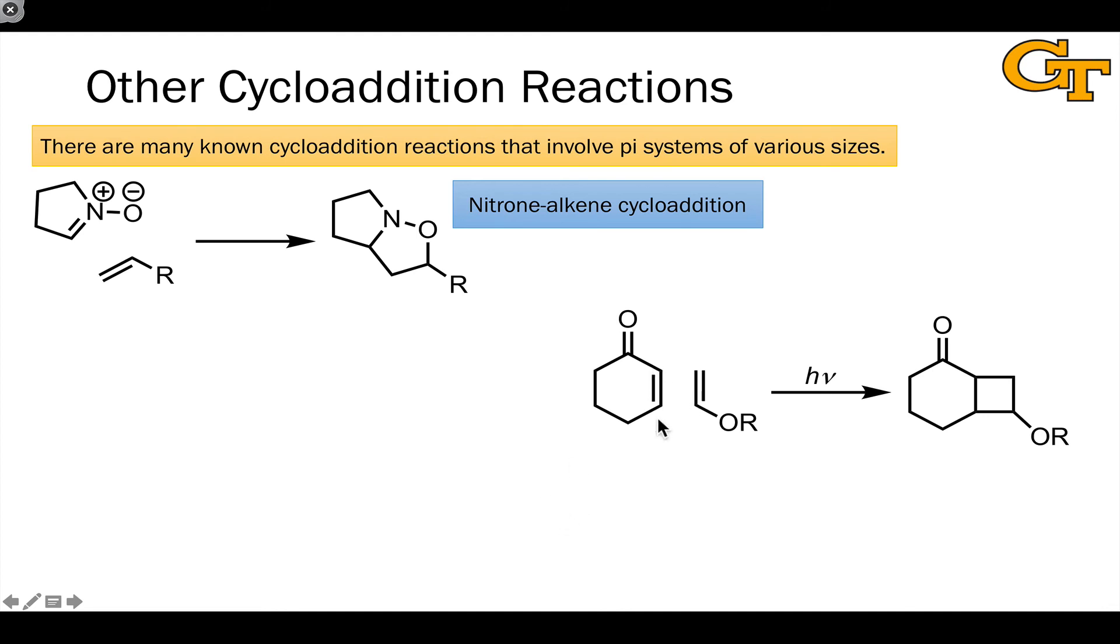Here's one involving two two-atom pi systems coming together, a 2+2 initiated by light, and this is called a photochemical 2+2 since light has to be involved.